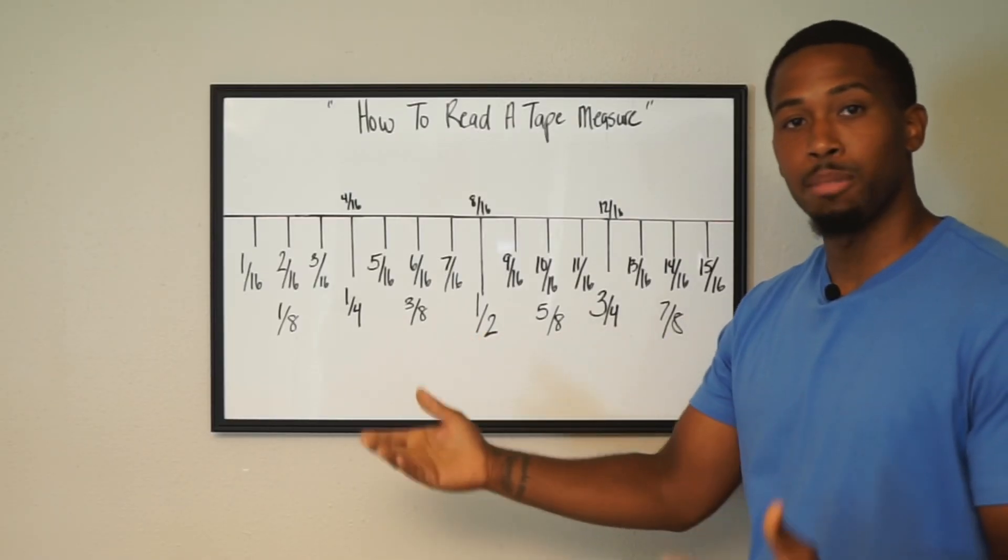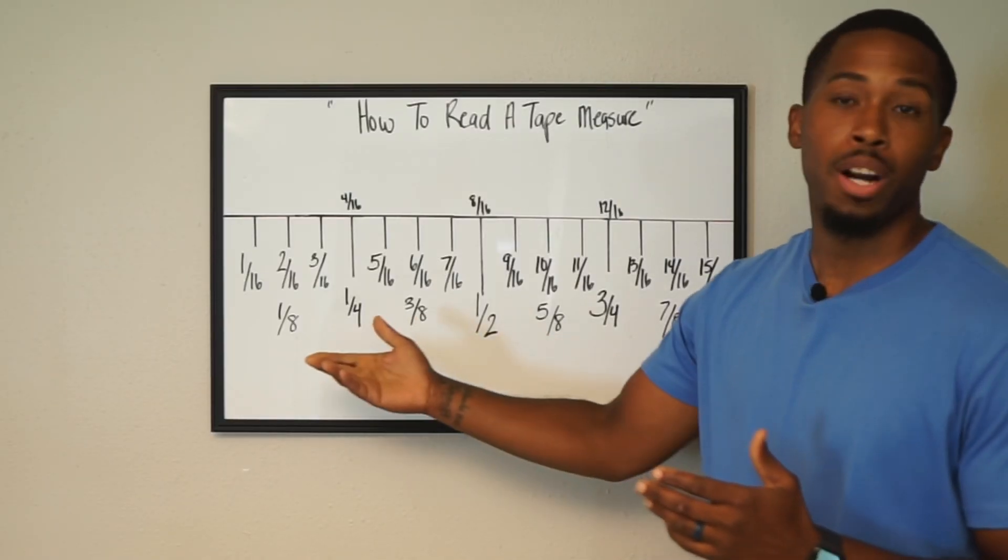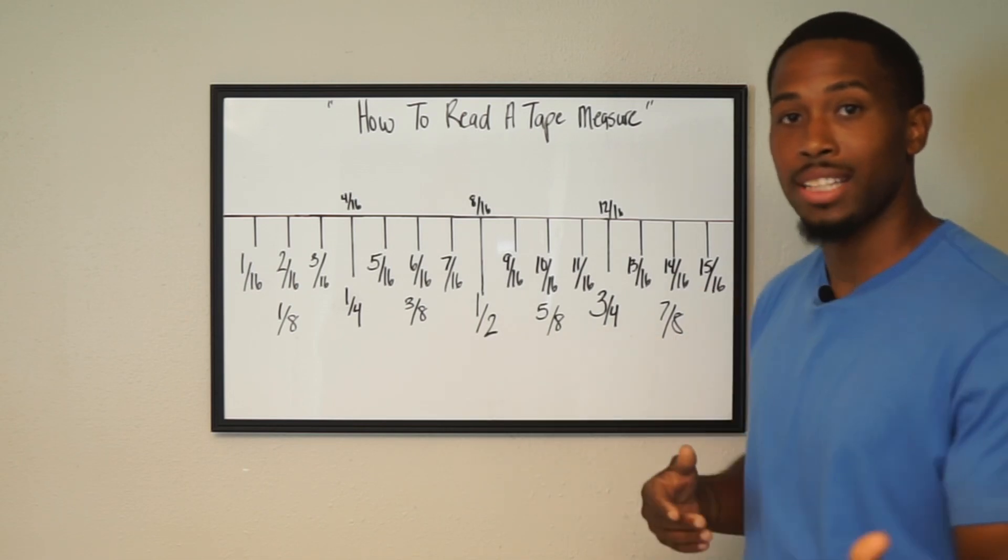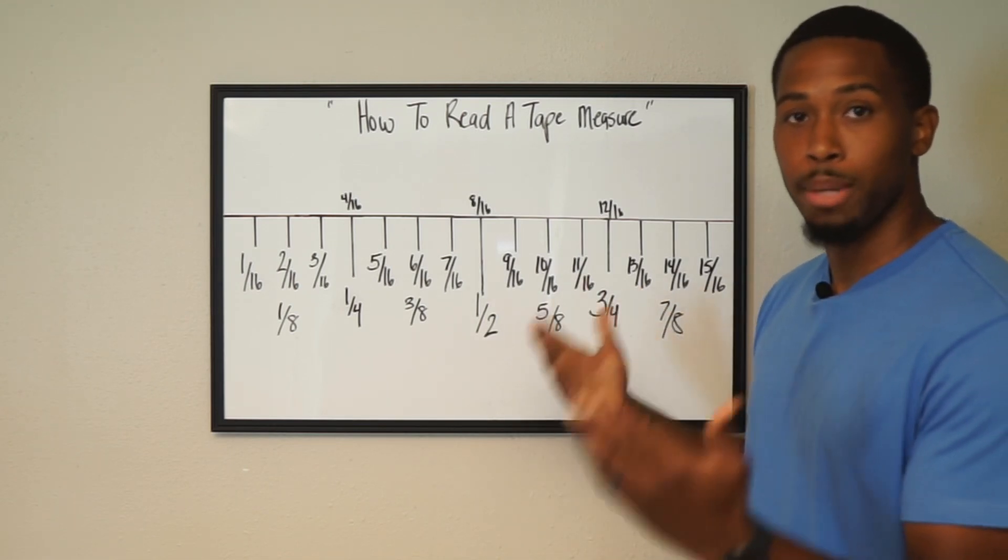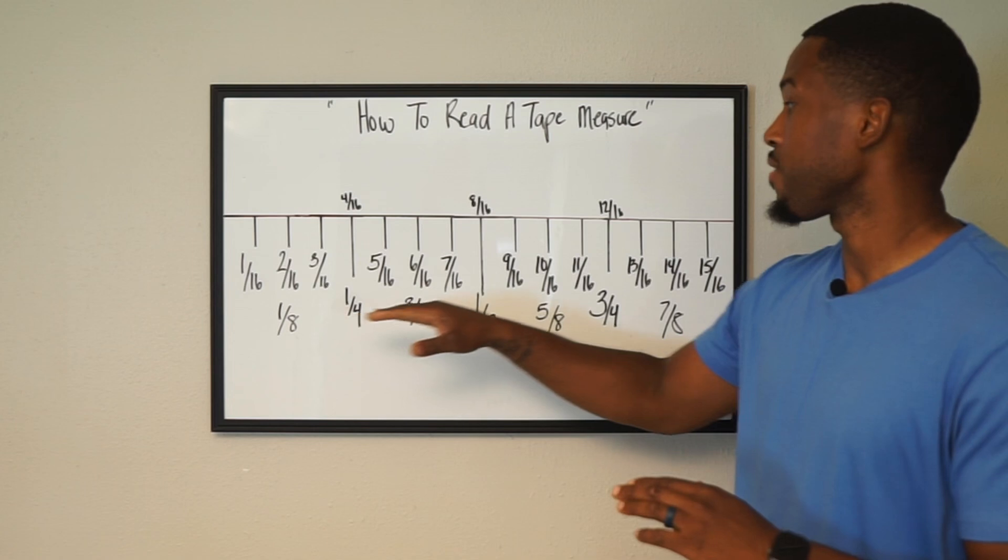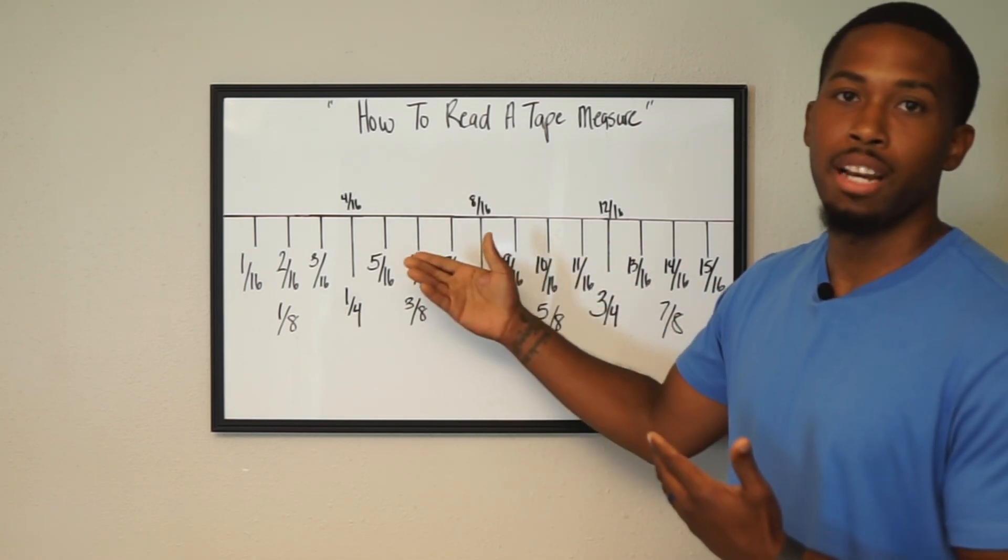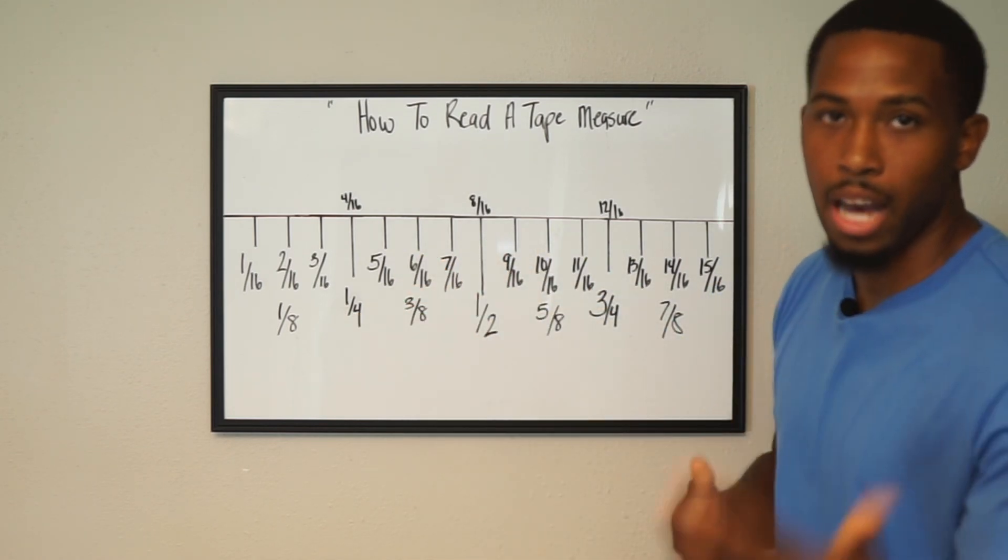Starting off, my goal is to make this as simple as possible for you. I've marked all 16 lines. So if you guys did not know, there are 16 lines which makes an inch. So we have all of our fractions rolled out. The goal is to break it down for you guys to have a better understanding of how to read it.